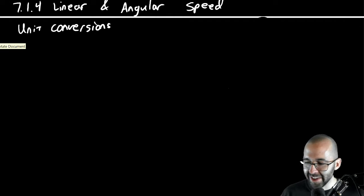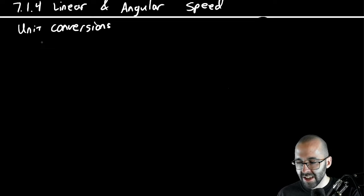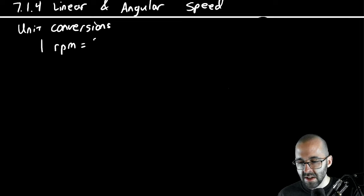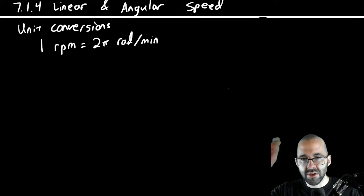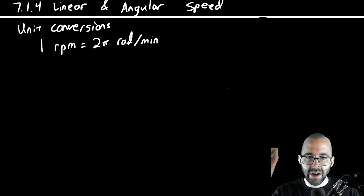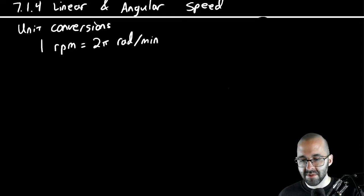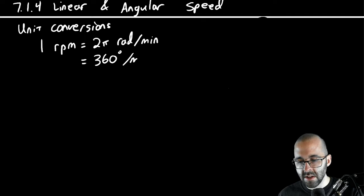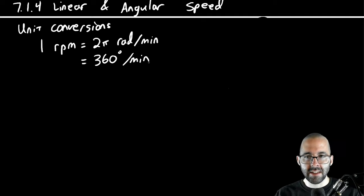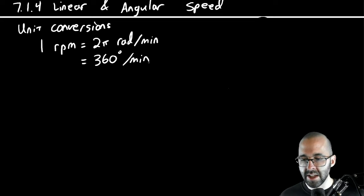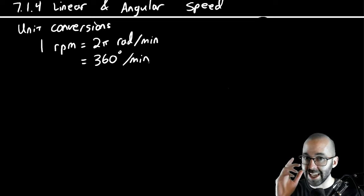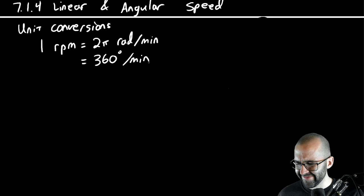The main things to realize: we're going to talk about revolutions per minute. One RPM is two pi radians per minute, because one revolution is 360 degrees. We could also write that as 360 degrees per minute. These are all the same — sometimes we'll use one form, sometimes another.